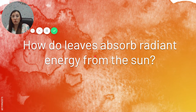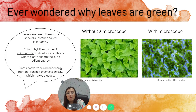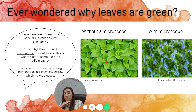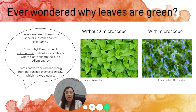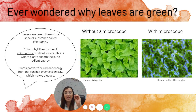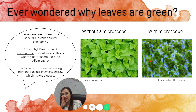We know that leaves absorb the radiant energy from the sun, but how do they do it? Here's a plant without a microscope — it's a normal green leaf. And here's a plant under a microscope. You can see all these little boxes — those are called chloroplasts. It's like a home that holds little green dots together. Those green dots are called chlorophyll. Chlorophyll lives inside a chloroplast, and every chloroplast is where photosynthesis happens. Leaves are green because of chlorophyll, which is what absorbs the sun's radiant energy.